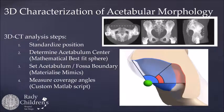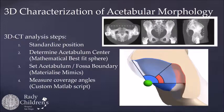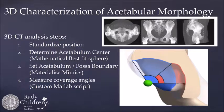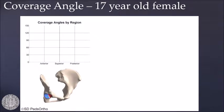We wanted to talk about this 3D characterization of the acetabular morphology. After obtaining the CT scan, we standardize the position using the landmarks shown on the top right. We then determine the acetabulum center using a mathematical best-fit sphere represented by the green dot, and then define the edge of the acetabulum as well as the fossa. The weight-bearing lunate surface is shown in blue, the fossa in red, and then we use a custom MATLAB script to measure coverage angles.